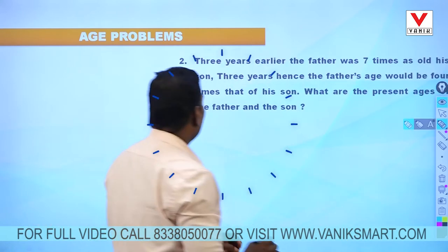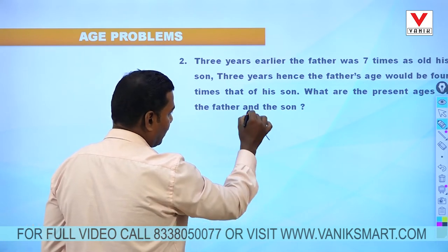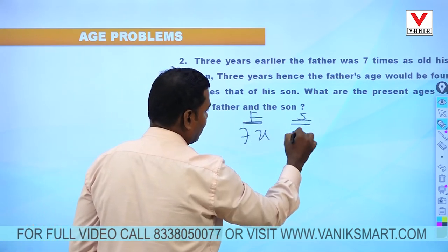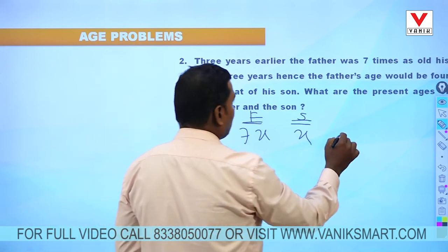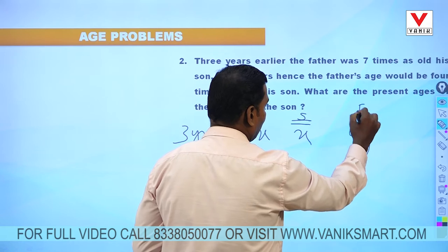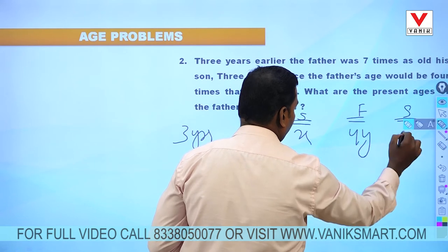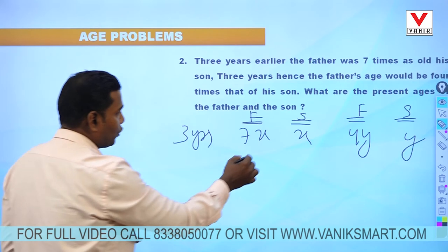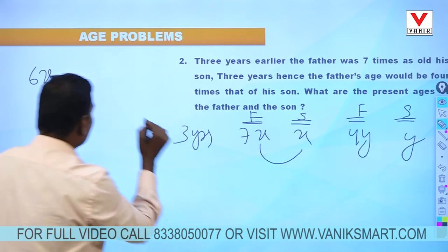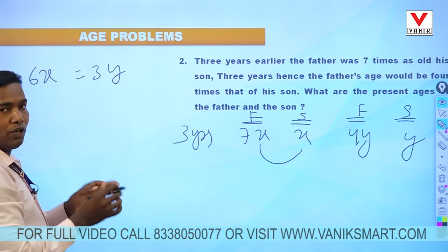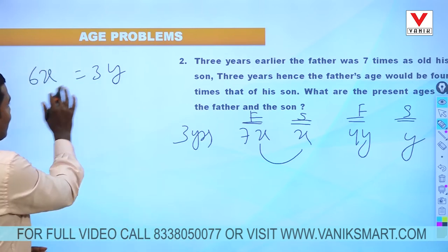Question 2: 3 years earlier, the father was 7 times as old as his son. So father is 7x and son is x. After 3 years, father's age would be 4 times the son's age, so father is 4y and son is y. The difference before 3 years is 6x, and after 3 years the difference is 3y. Since father and son difference is always the same, 6x equals 3y.